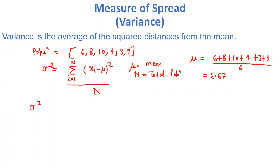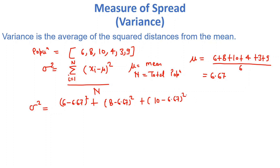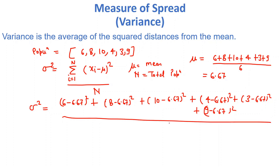Now let's calculate the variance. Variance equals the sum of each (xi minus 6.67) squared, divided by 6. So that is (6 minus 6.67) squared plus (8 minus 6.67) squared plus (10 minus 6.67) squared plus (4 minus 6.67) squared, and so on, all divided by 6. This comes out to around 6.55. So this is the variance.